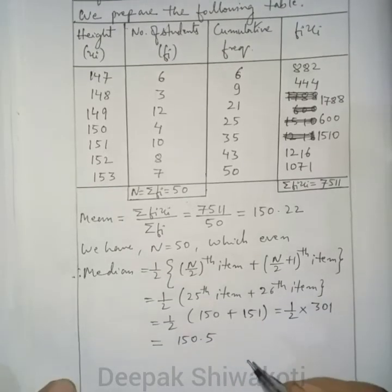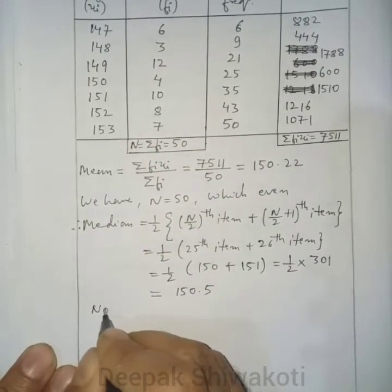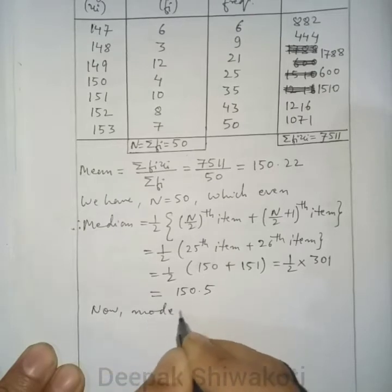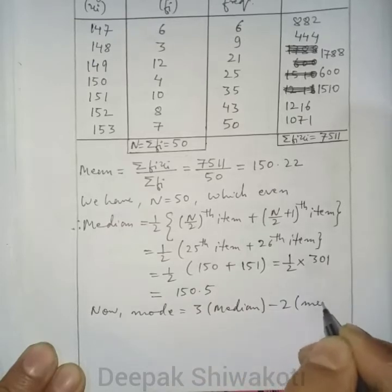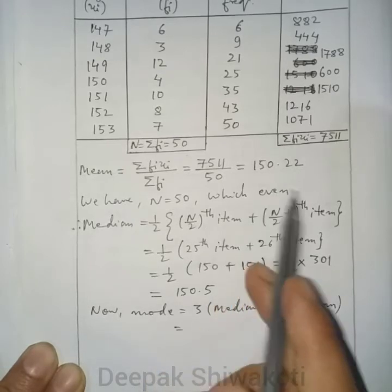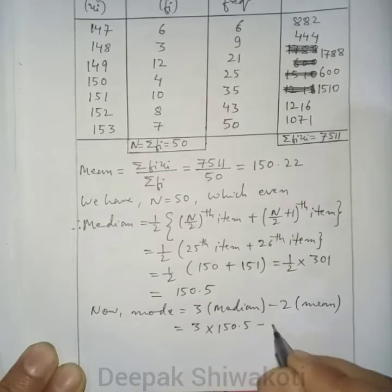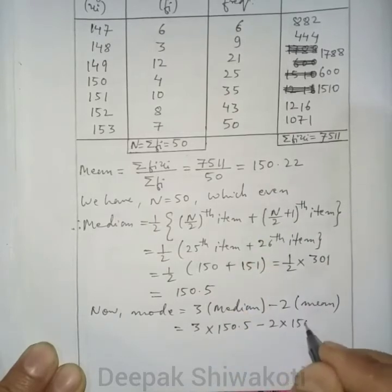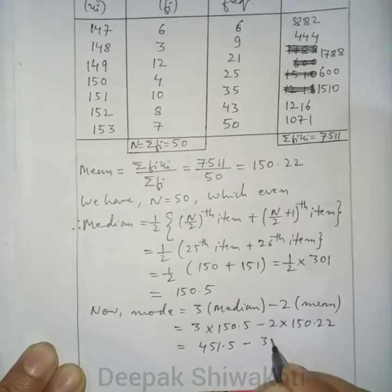Using the empirical formula to find mode: mode = 3 × median − 2 × mean. Substituting: mode = 3 × 150.5 − 2 × 150.22 = 451.5 − 300.44.